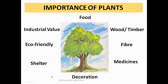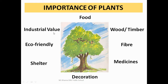Let us have a look at the mind map of this chapter — how plants are important to us. Plants provide us food, wood, timber, and fiber. They also give us medicine. They help in decoration. They provide shelter to many animals. They are eco-friendly and reduce pollution. They help to prevent soil erosion. They also have industrial value — in textile and paper industries.